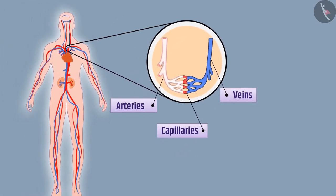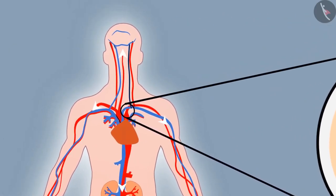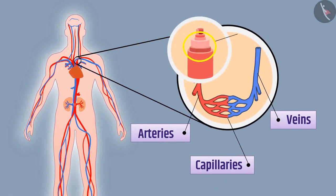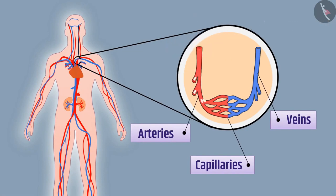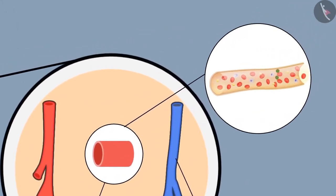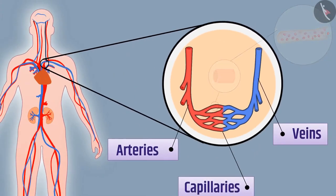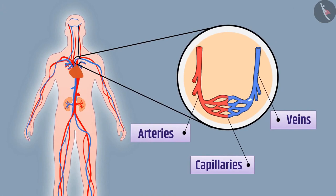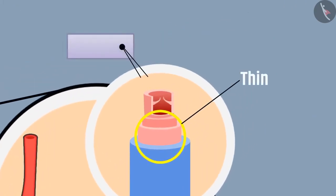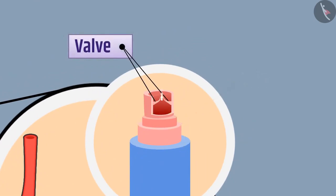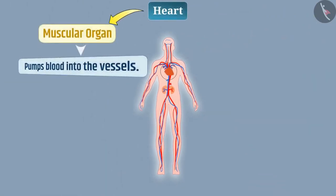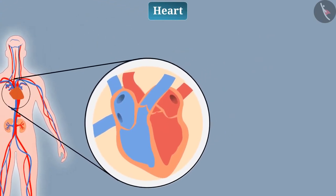Arteries carry oxygenated blood from the heart to various parts of the body. Since the heart pumps blood into arteries, blood flows in them with high pressure. The walls of arteries are thick and flexible to bear this high pressure. Each artery is divided into smaller vessels. The wall of the smallest vessel is one cell thick, allowing easy exchange of substances between the blood and the cells.